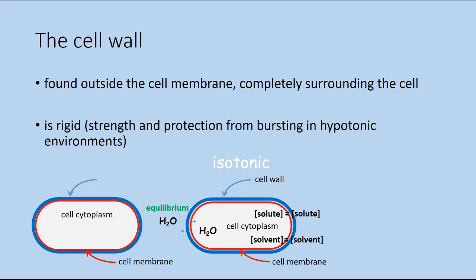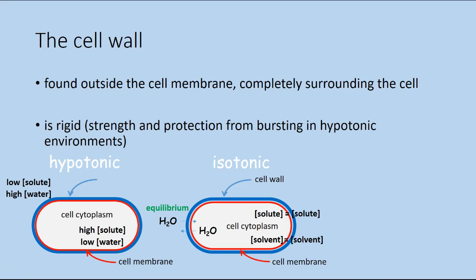Some cells are found in a hypotonic environment. Hypo means there's less solute outside the cell than inside the cell, and the inverse is true for the solvent or water. Aquatic bacteria live in a hypotonic environment, so without a cell wall, osmosis will lyse the cells because of an uncontrollable movement of water inside the cells. But because bacteria have a rigid cell wall surrounding their cells, only so much water can enter until the membrane is pressed against the cell wall, stopping osmosis and thus preventing lysis.